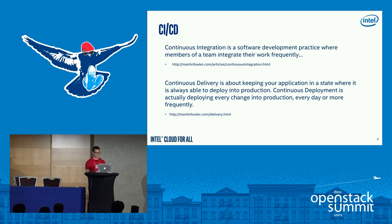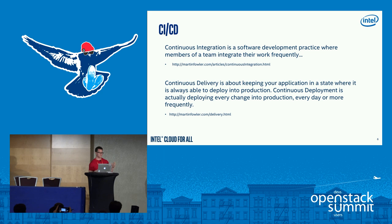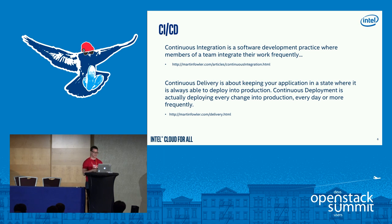Thanks to a couple of developers who created these technologies: we have continuous integration and continuous delivery, or continuous deployment. Continuous integration is a software development practice focused on continuously integrating the work developers are doing, which also means running tests to ensure nothing is broken. So with CI, every single commit or change that developers make is verified to not break anything.